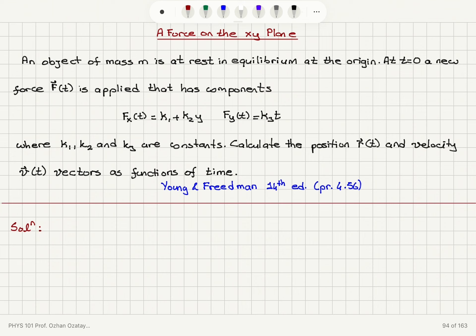We start from rest in equilibrium, so the initial velocity is 0. We are at the origin at the beginning, so x₀ = 0 and y₀ = 0.